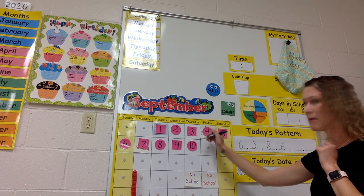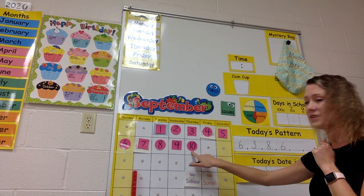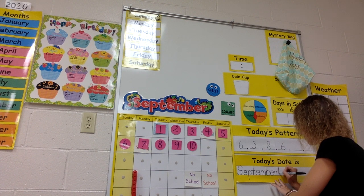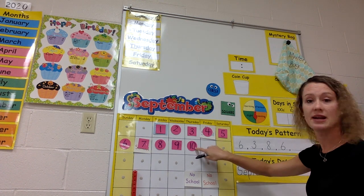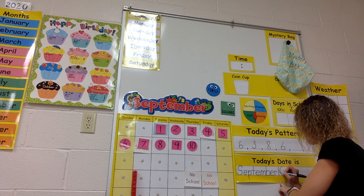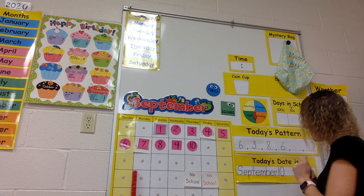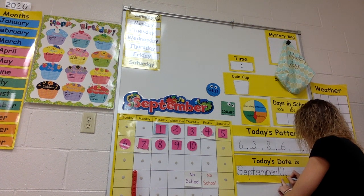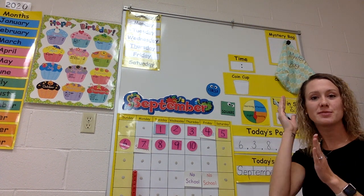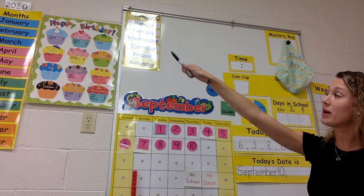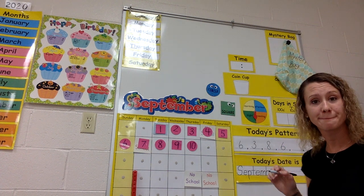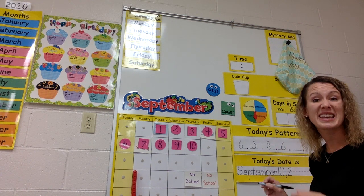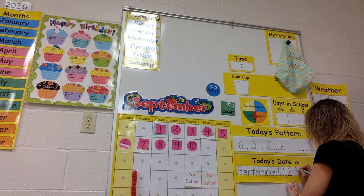Then I need to write my date. The date today is the 10th. What number goes first? A one. And then I need a zero. After my date, I need a cute little comma. Then last goes my year. What number goes first in my year? Two. What number goes second? A zero.